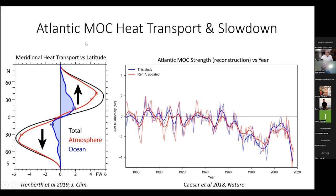Additionally, the Atlantic MOC strength — I'll just say MOC from now on — has been shown to decrease over the last decade. It's still somewhat uncertain. Here I'm showing a reconstruction based on a proxy related to surface temperatures in the Atlantic, because we only have direct MOC measurements from the last several decades. There is by now fairly substantial evidence that there has been a slowdown and that there are significant decadal oscillations, but we really need to better observe it in the future and understand what causes that and how it will change under climate change.